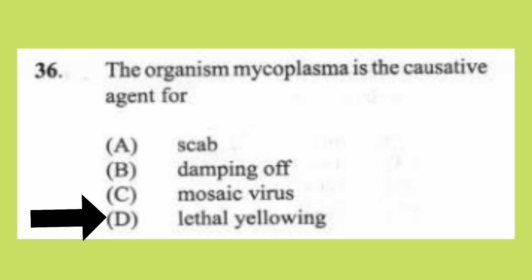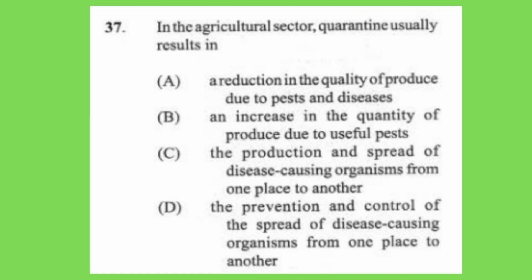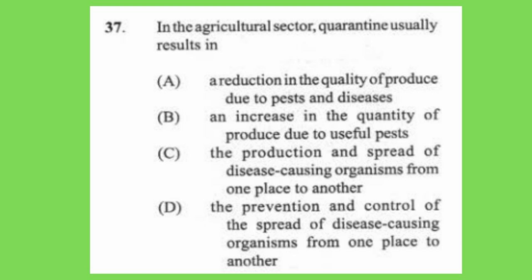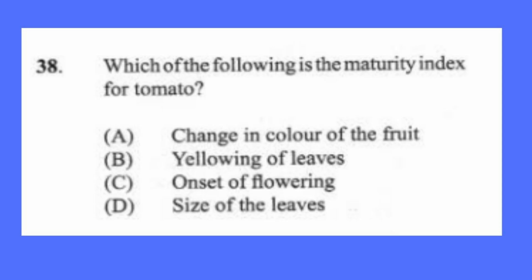Question 37: In the agricultural sector, quarantine usually results in (a) a reduction in the quality of produce due to pests and diseases, (b) an increase in the quantity of produce due to useful pests, (c) the production and spread of disease-causing organisms from one place to another, (d) the prevention and control of the spread of disease-causing organisms from one place to another. The answer is D.